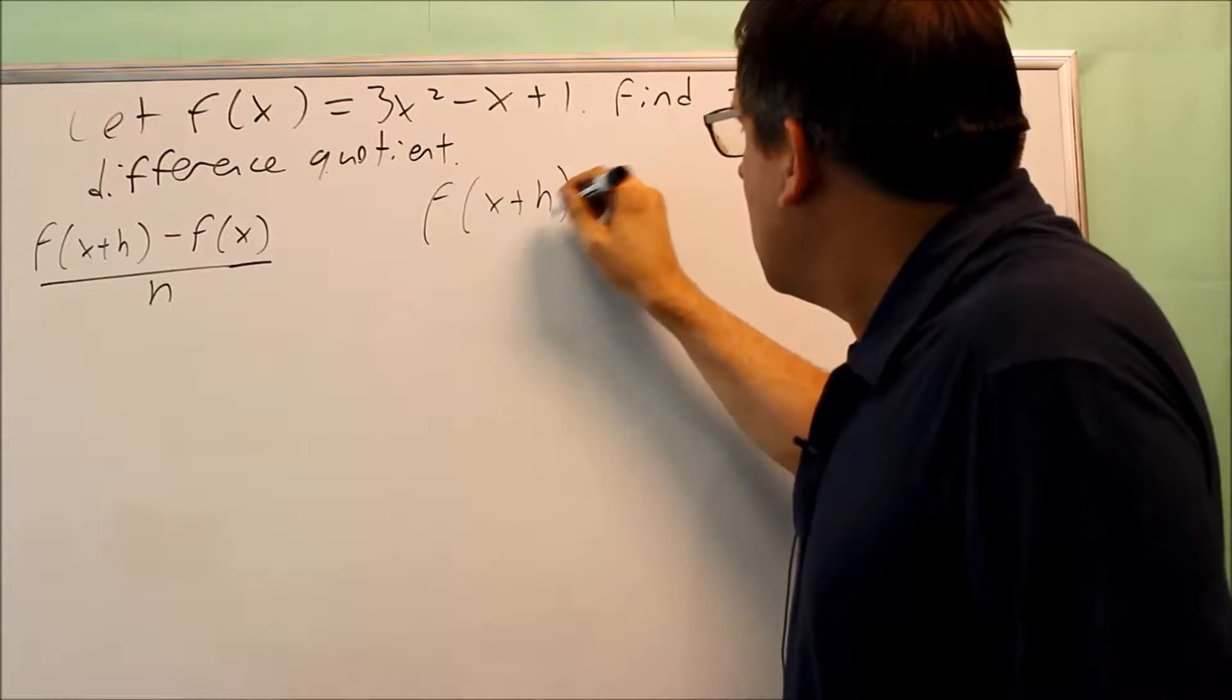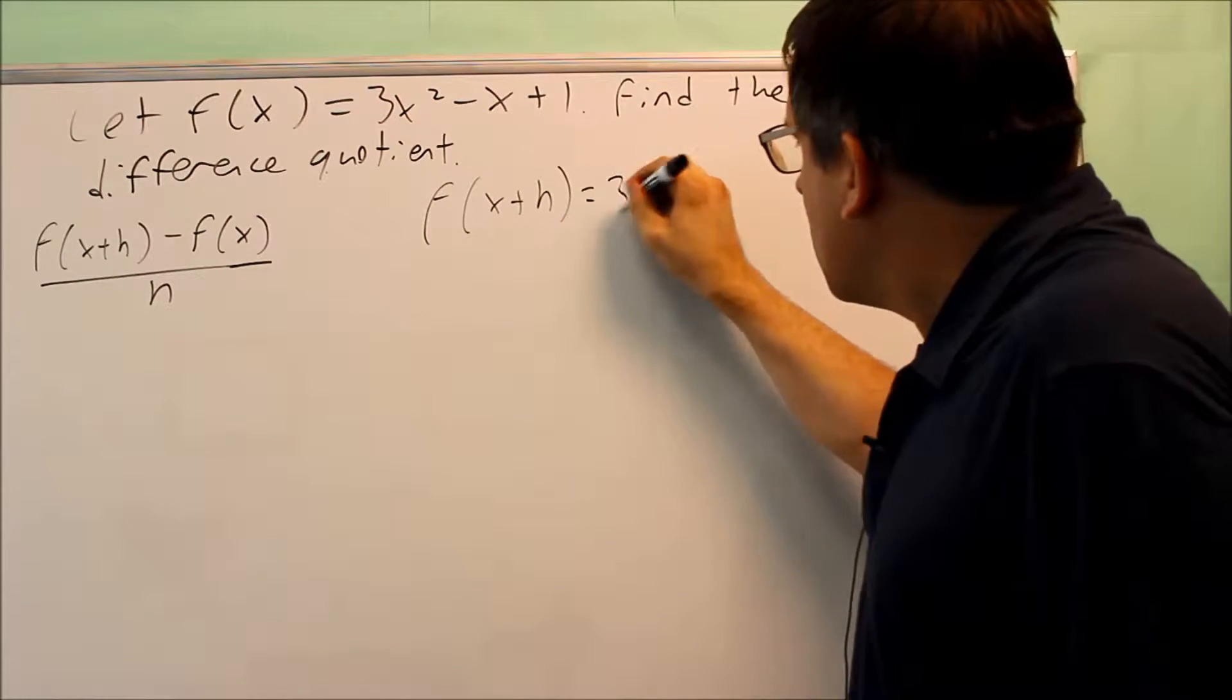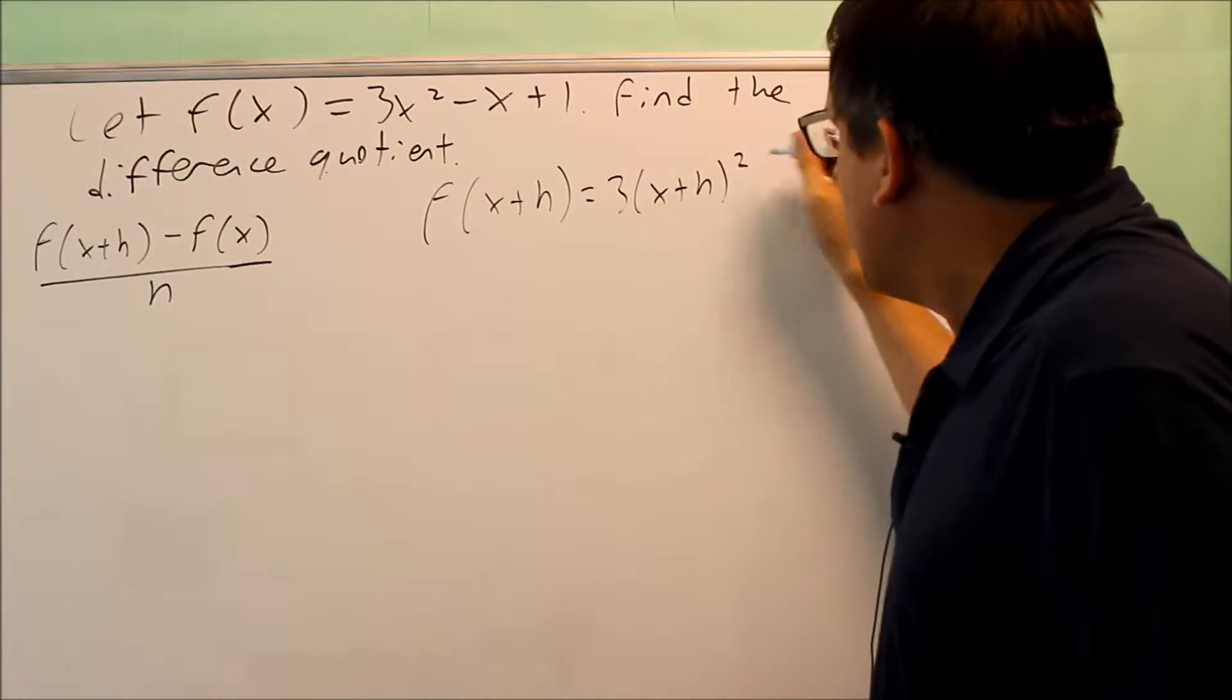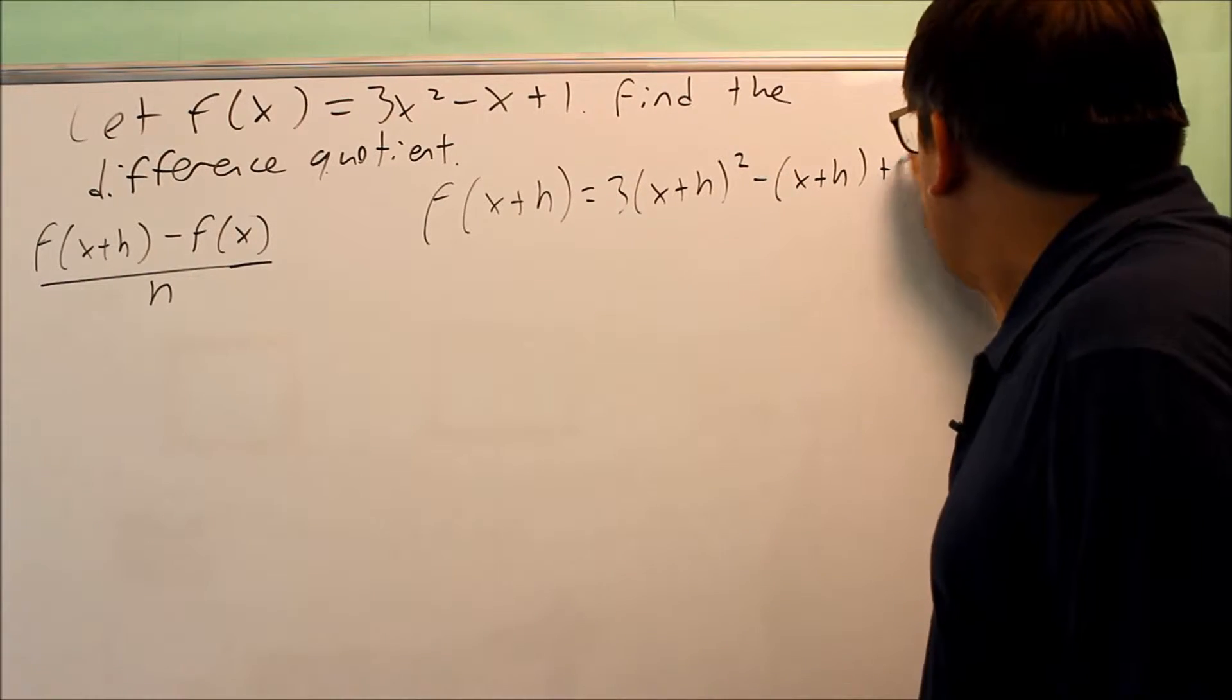So when we do that, every x we see here, we're going to replace it with x plus h. So I have x plus h goes here, minus x plus h, and then I have plus 1.